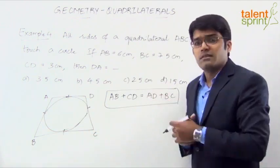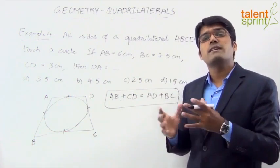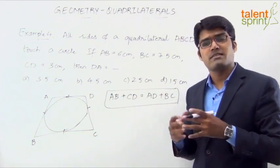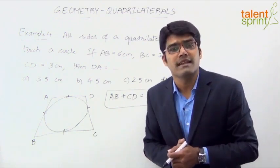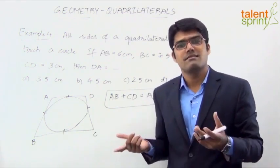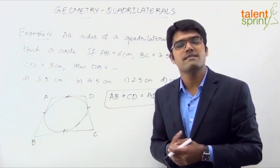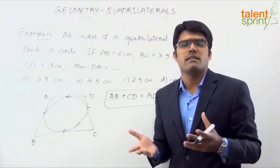A simpler way of understanding this would be to take a square or a rectangle. Construct a square and draw a circle such that the circle touches all the four sides. Now, opposite sides are equal. Sum of opposite sides is equal. Likewise, in a rectangle.